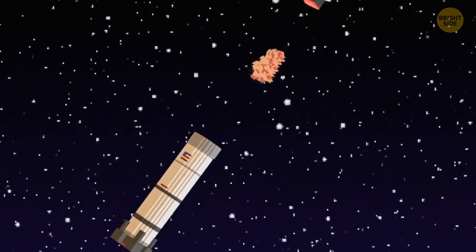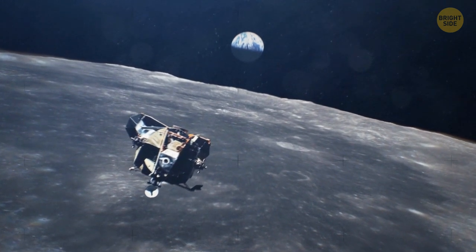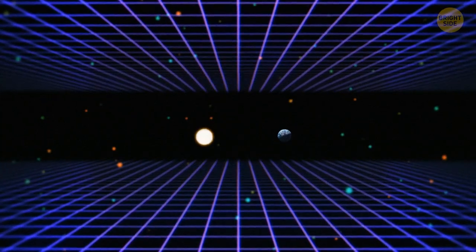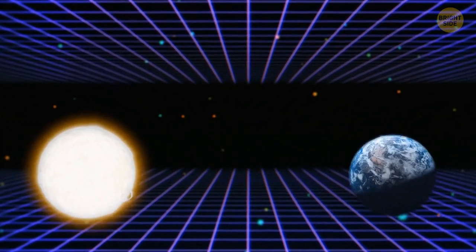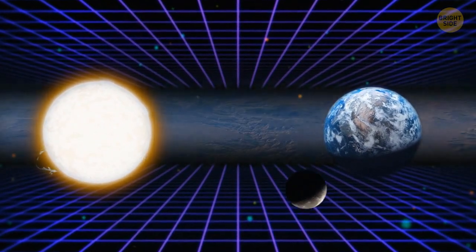We'll follow its journey step by step. The probe was launched on August 12, 2018, and began its journey toward our star. The sun is 93 million miles away from Earth. That's 390 times the Earth-Moon distance and 36,000 times the width of the United States from coast to coast.